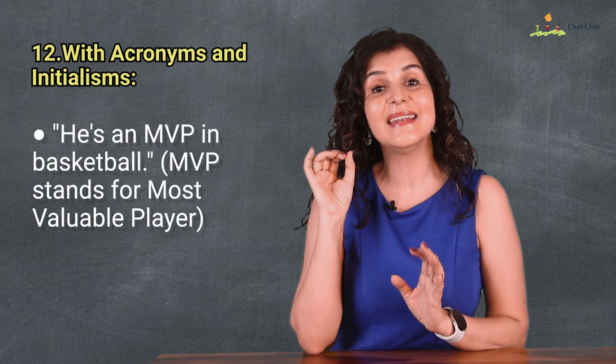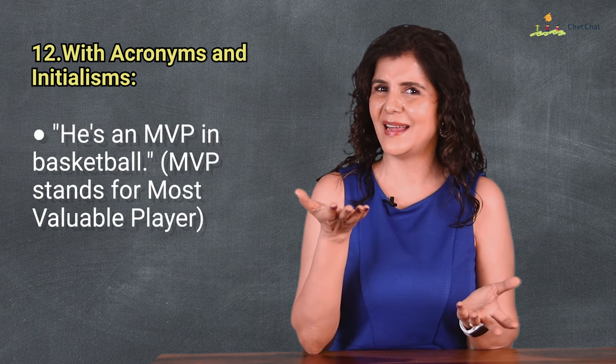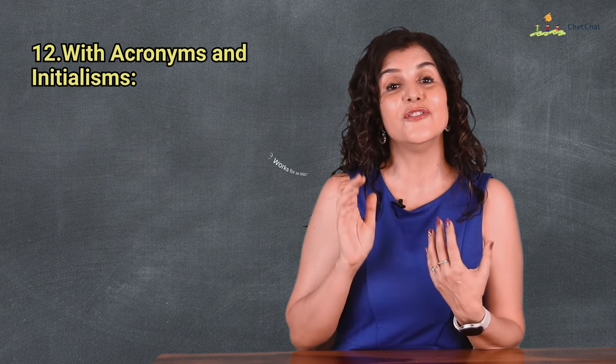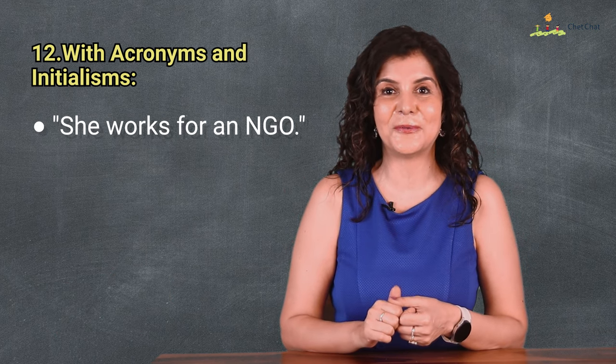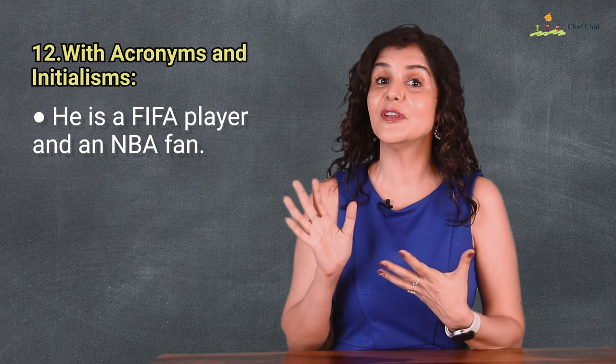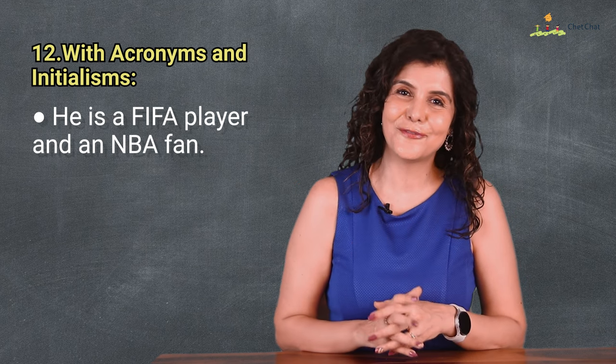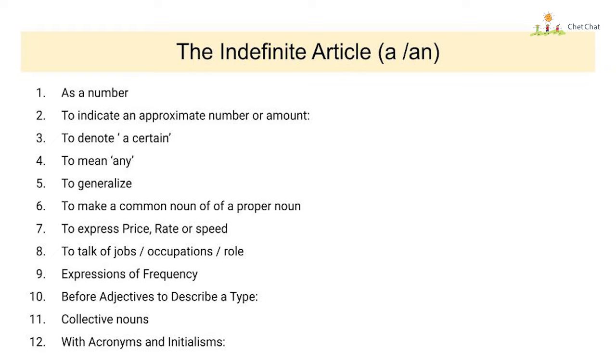Indefinite articles a and an are also used with acronyms and initialisms. He is an MVP in basketball — MVP stands for most valuable player. She works for an NGO — comment below with the full form. He is a FIFA player and an NBA fan. Here is a full list of all 12 use cases of indefinite articles — take a screenshot. The best way to learn this topic is to read a lot and practice speaking often.